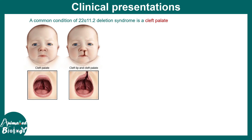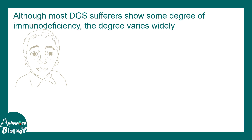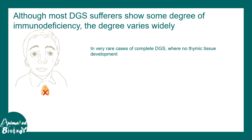Other clinical presentations include cleft palate — generally a cleft in the upper palate — which can lead to problems with speech or swallowing in these babies. Although DiGeorge syndrome sufferers show many degrees of immune deficiency, the degree varies widely. In very rare cases, thymic tissue is completely absent, but in most cases the thymus is present in a very small form. Either way, T cell production and formation is abrogated.